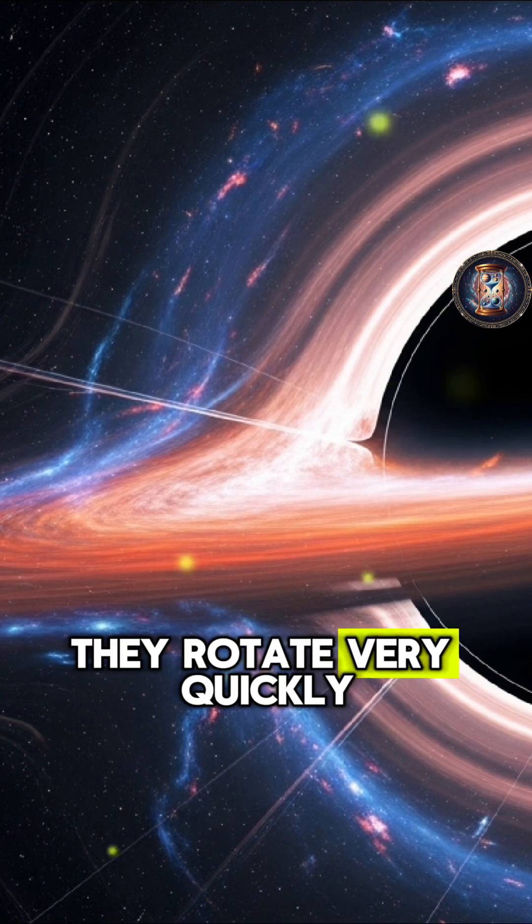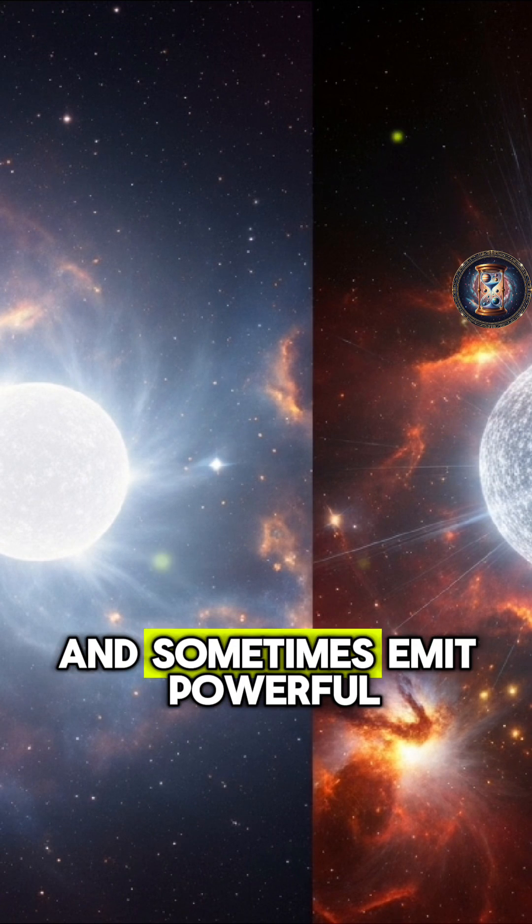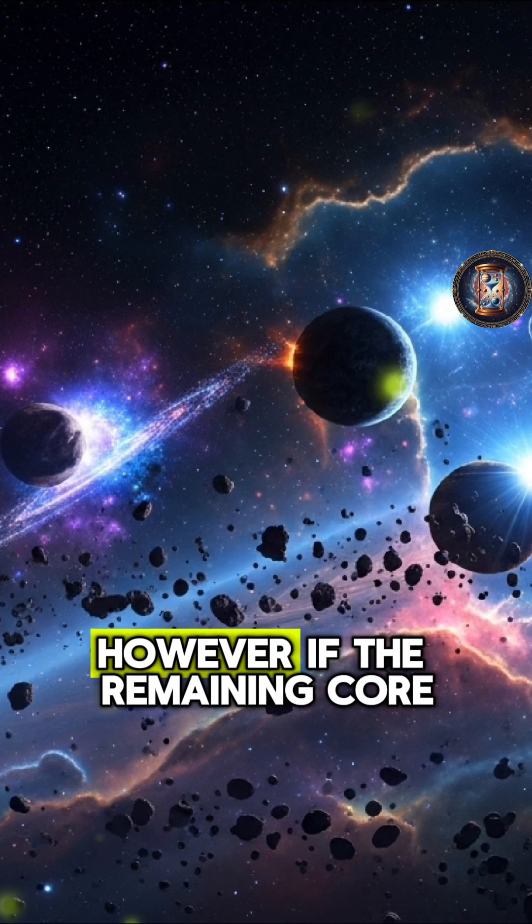They rotate very quickly, have extremely strong magnetic fields, and sometimes emit powerful beams of radiation periodically, known as pulsars.